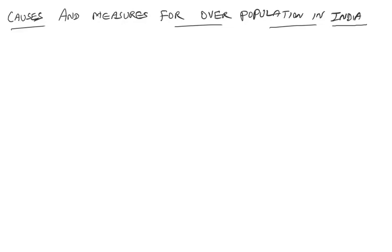Hello and welcome to one and all. In today's class, we will discuss the causes and measures for overpopulation in India. We have already seen that India is in the second stage of demographic transition and is the second most highly populated country in the world. Almost 17% of the world's population are in India, sharing only around 2 to 2.5% of the world's geographical area and approximately 7 to 7.5% of the world's GDP.